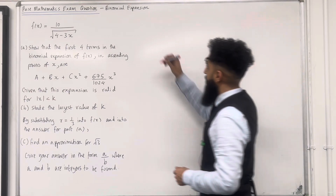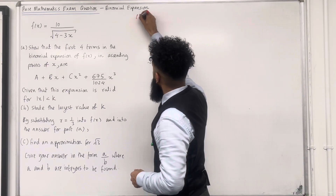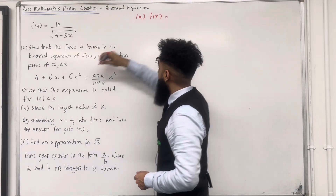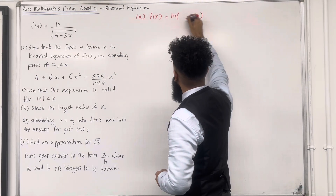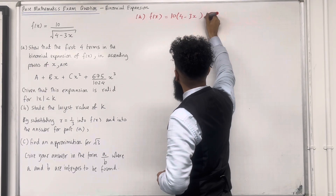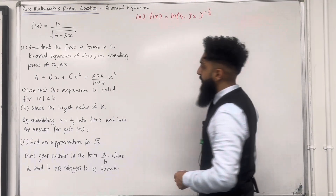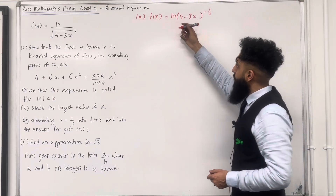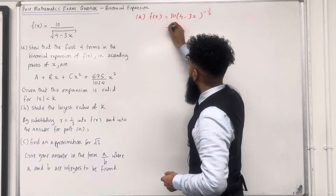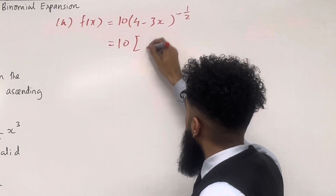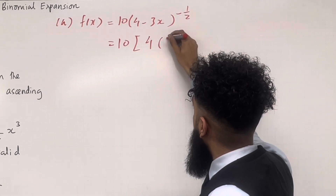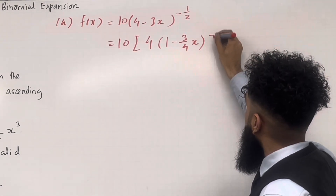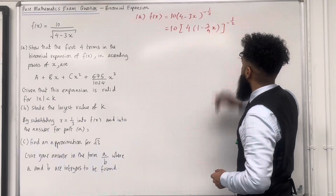Let's have a look at the solution to part A. So we've got f(x) equal — we can rewrite this as 10 in bracket 4 minus 3x raised to the power minus a half. Before we apply the binomial expansion formula we must take out a factor of 4. So we've got 10, open square bracket, take out 4, open bracket, 1 minus 3 over 4 x, close bracket, close square bracket, to the power minus a half.